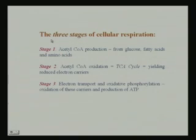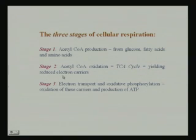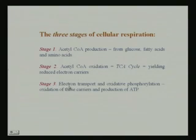The three stages of cellular respiration are: first, acetyl-CoA production from glucose, fatty acids, and amino acids; second, acetyl-CoA is oxidized to start the TCA cycle, yielding reduced electron carriers; and third, those electron carriers enter the electron transport chain and oxidative phosphorylation.